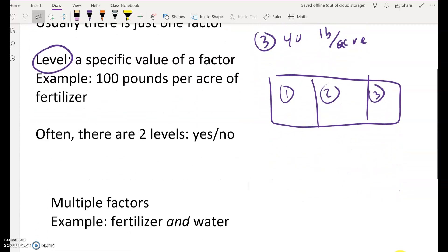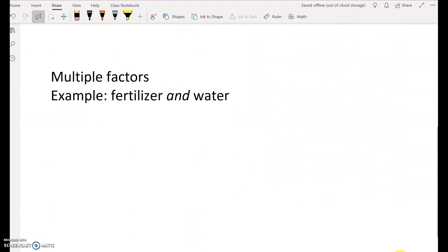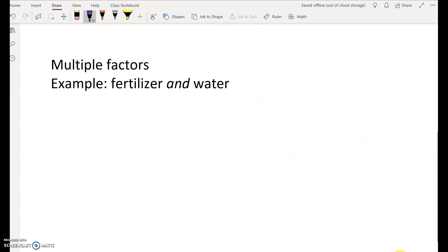Now, you can have multiple factors. For example, fertilizer and water. So we have two explanatory variables here. There are two things that we're manipulating to try to get some desired outcome.